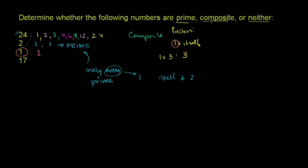You have to have 1, yourself, and some other things. So it's not composite. So 1 is neither prime nor composite. 1 is neither.